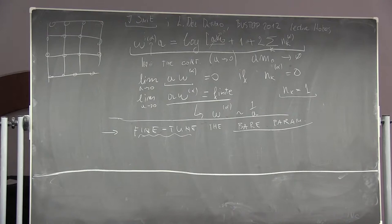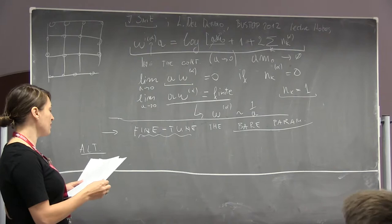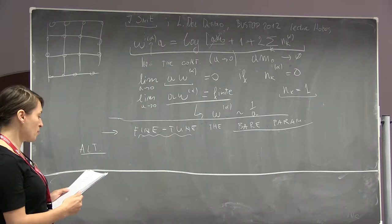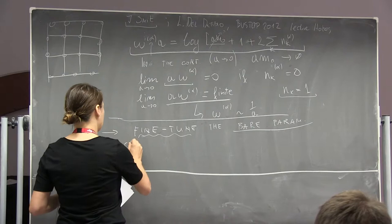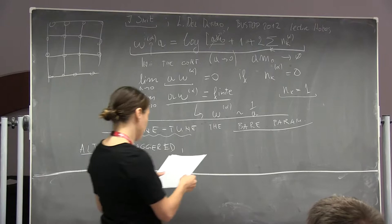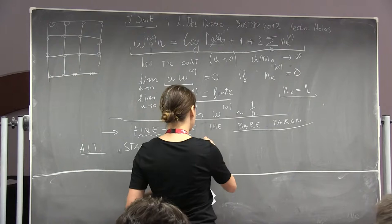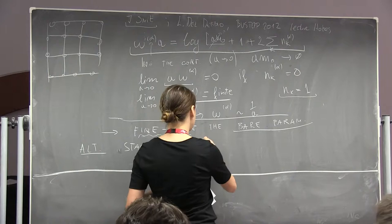There are alternative discretizations, each with advantages and disadvantages similar to Wilson fermions. For example, staggered fermions appeared first right after Wilson fermions. Then you have discretizations which preserve not fully but partially a chiral symmetry on the lattice — these go under the name of overlap fermions.